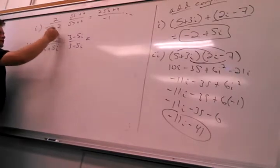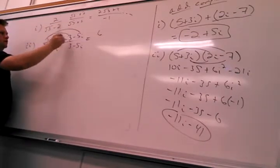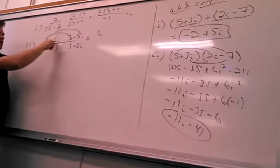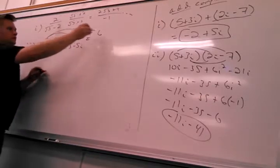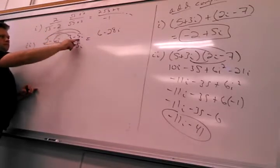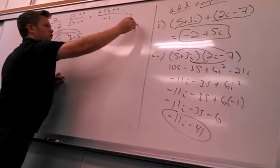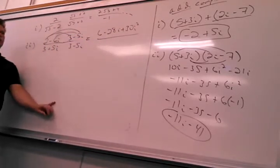All right, so catch up to you here. 6 minus 10i minus 18i, so minus 28i. So plus 30i squared. Let me write that first here, everybody's with us.